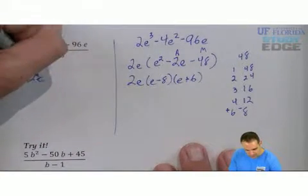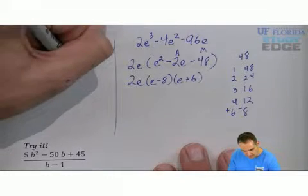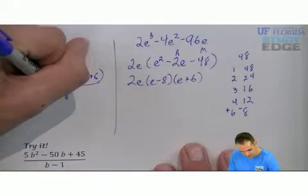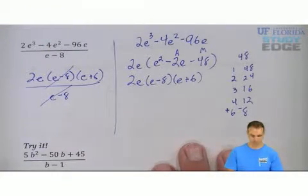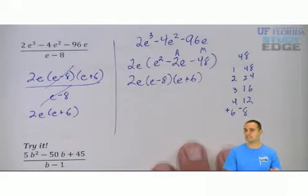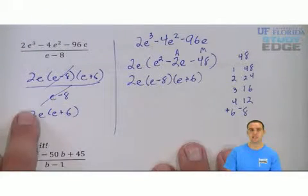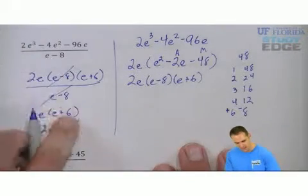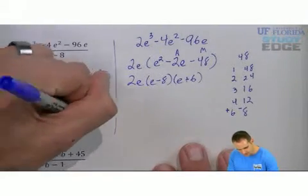So now that I've done all that side work, I would rewrite the numerator as 2e, e minus 8, e plus 6. E minus 8 simplify. You're left with 2e times e plus 6. And if you didn't see that as the answer, you would distribute all over again. 2e times e is 2e². And 2e times 6 is 12e.